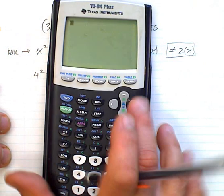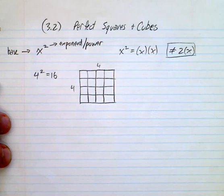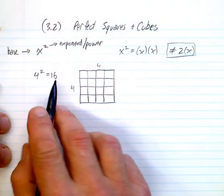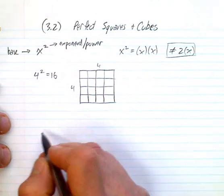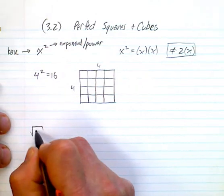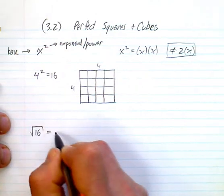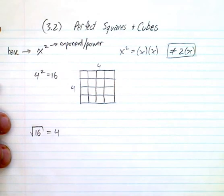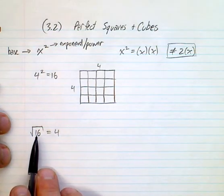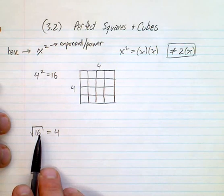Similarly, if you wanted to take the square root of 16 to get back to 4 — the square root of 16 equals 4. Square root basically means what do you multiply by itself to get that number inside.